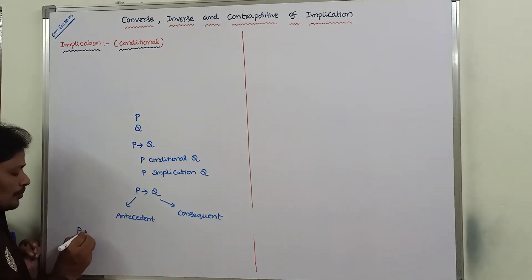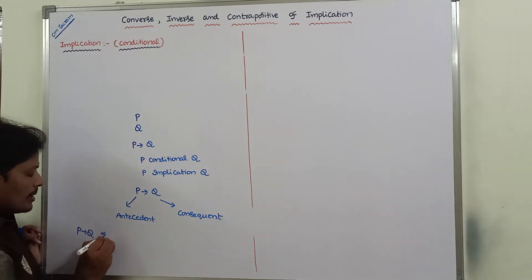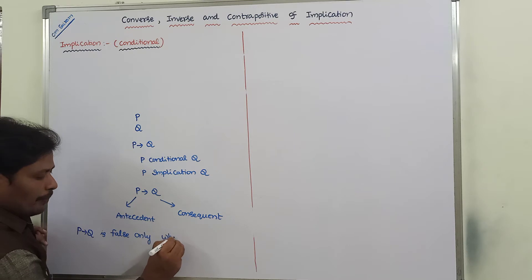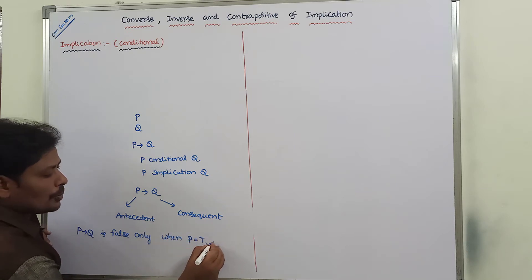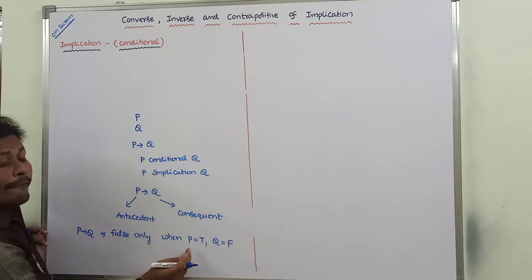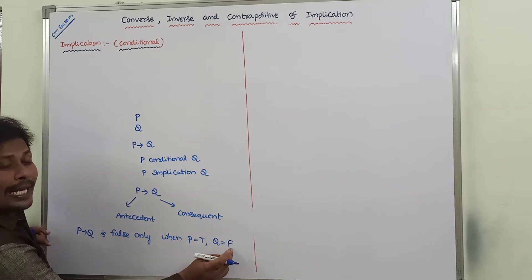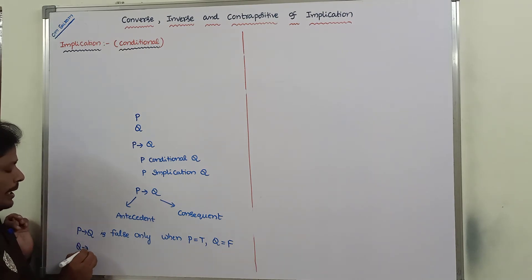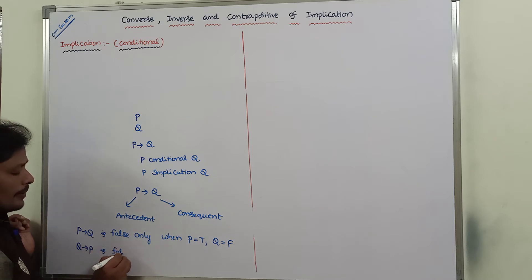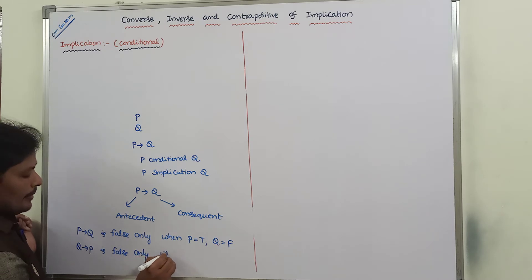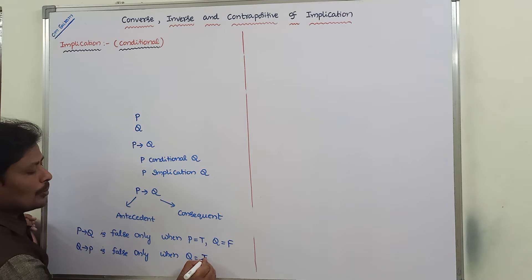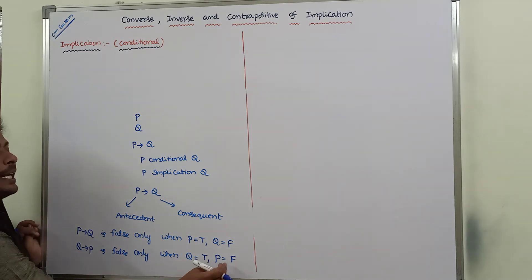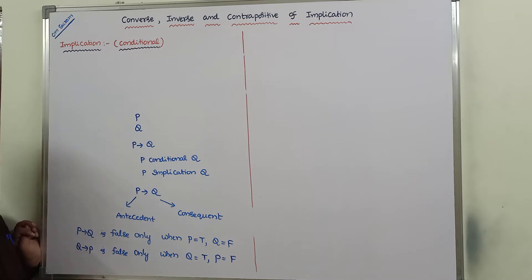P conditional Q is false only when P's truth value is true and Q's truth value is false. Whenever P is true and Q is false, then P conditional Q is false. Similarly, Q conditional P is false only when Q's value is true and P's value is false.